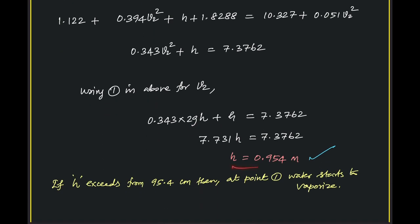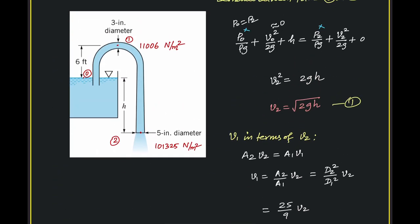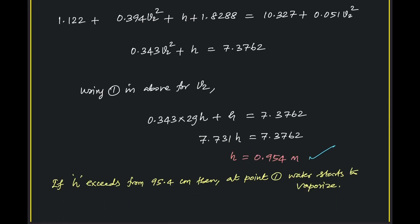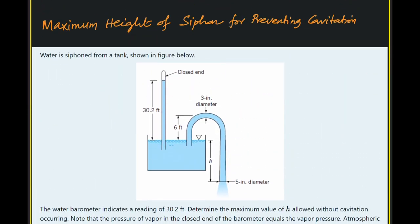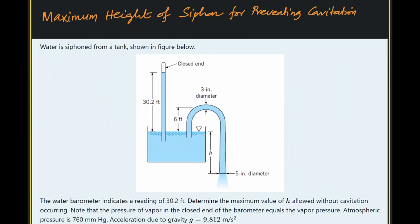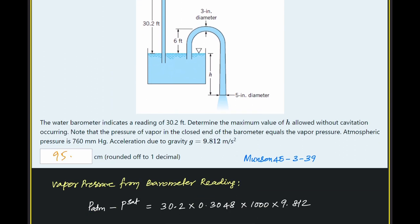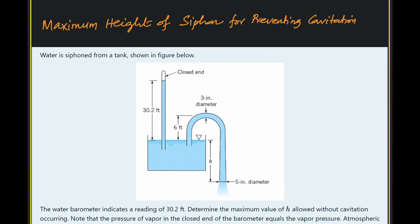Solving, H comes out as 0.954 meters, or 95.4 centimeters. If H exceeds this amount, the pressure at point 1 will fall below the vapor pressure, causing cavitation. Therefore we must ensure H does not exceed 95.4 cm. The answer is 95.4 centimeters.